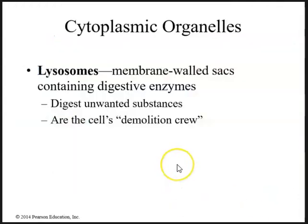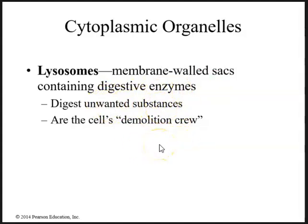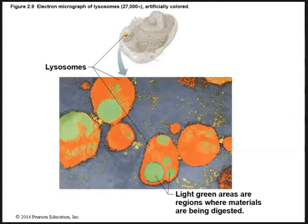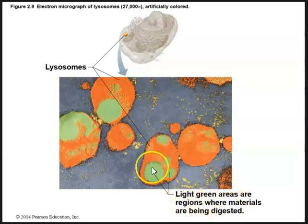The next organelle is lysosomes — membrane-walled sacs containing digestive enzymes. They digest any unwanted substances and are known as the demolition crew of the cell. They break down and digest any unwanted substances within the cell. Electron micrographs show lysosomes containing those enzymes, with light green areas representing regions where materials are being digested.